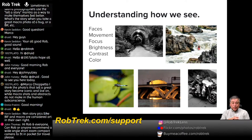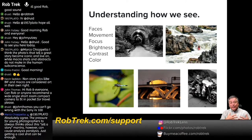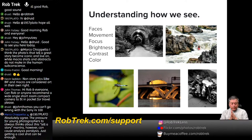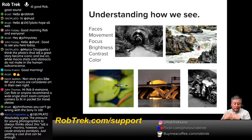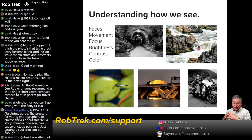As human beings and animals, we're very sensitive to movement — things moving in a frame. A lot of times we want to create images that show movement, either through motion blur or through anticipation of movement. Things that are in focus are the first things our eyes are drawn to, and also brightness, contrast, and colors.